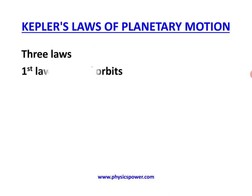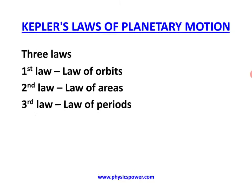The first law is the law of orbits. The second law is the law of areas — we will explain the details of the planet's radius vector. Next, Kepler's third law is about the time period: the time for one complete revolution depends on a specific parameter.